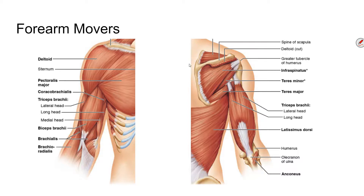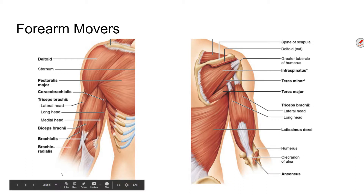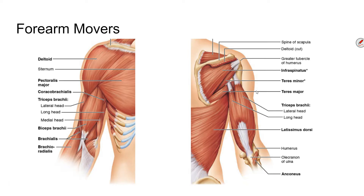The next group is forearm movers — muscles specifically moving your lower arm independent of the rest. The key ones are the biceps brachii, which flexes the forearm; the brachialis, which is underneath and behind the bicep and also a major flexor; and the brachioradialis, which runs from the humerus down to the radius. On the posterior side, the big one is the triceps brachii, called the triceps because it has three origin heads. The biceps has two origins. The triceps extends the forearm.